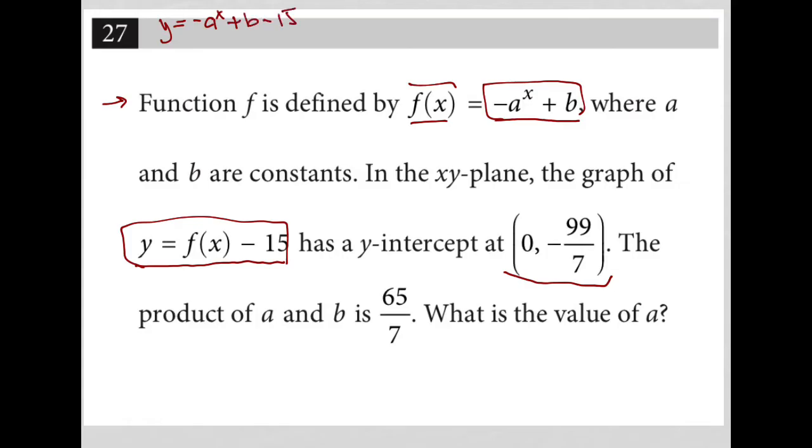We're told that from that equation, the y-intercept is that when x equals 0, y is equal to negative 99 over 7. So that means I'd have negative 99 over 7 equals negative a to the 0 plus b minus 15. I know that a to the 0 is just equal to 1.